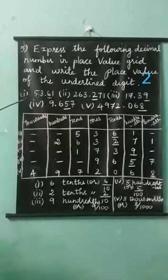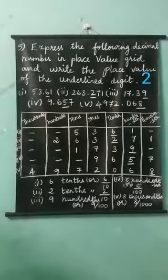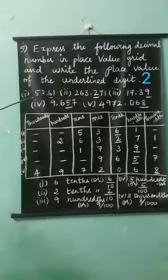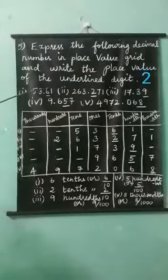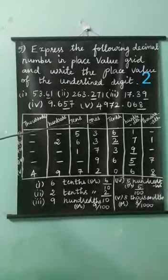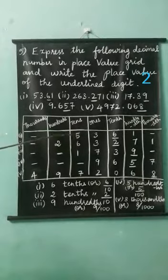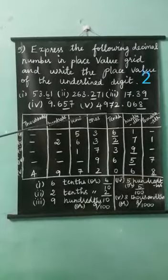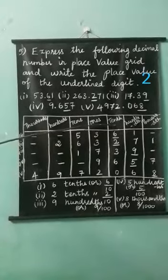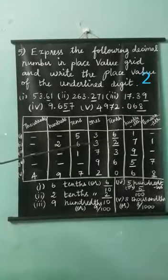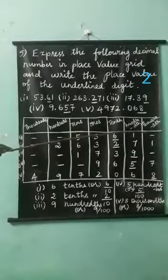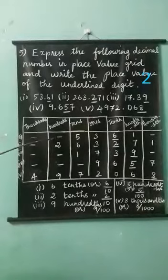First, see the first number: 53.61. Here, one's place is three, tens place is five. Tenth place is six, hundredth place is one. So, we write the one's place: three, five. Tenth place is six. Hundredth place is one. The other number is dash — you put the dash for the missing number.